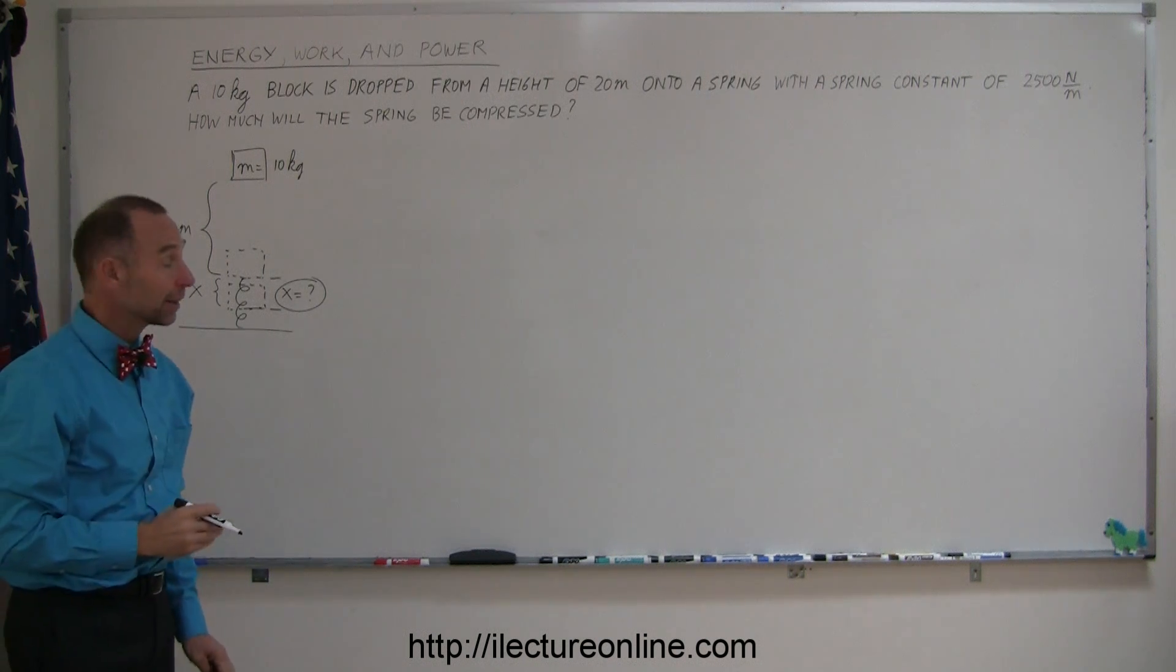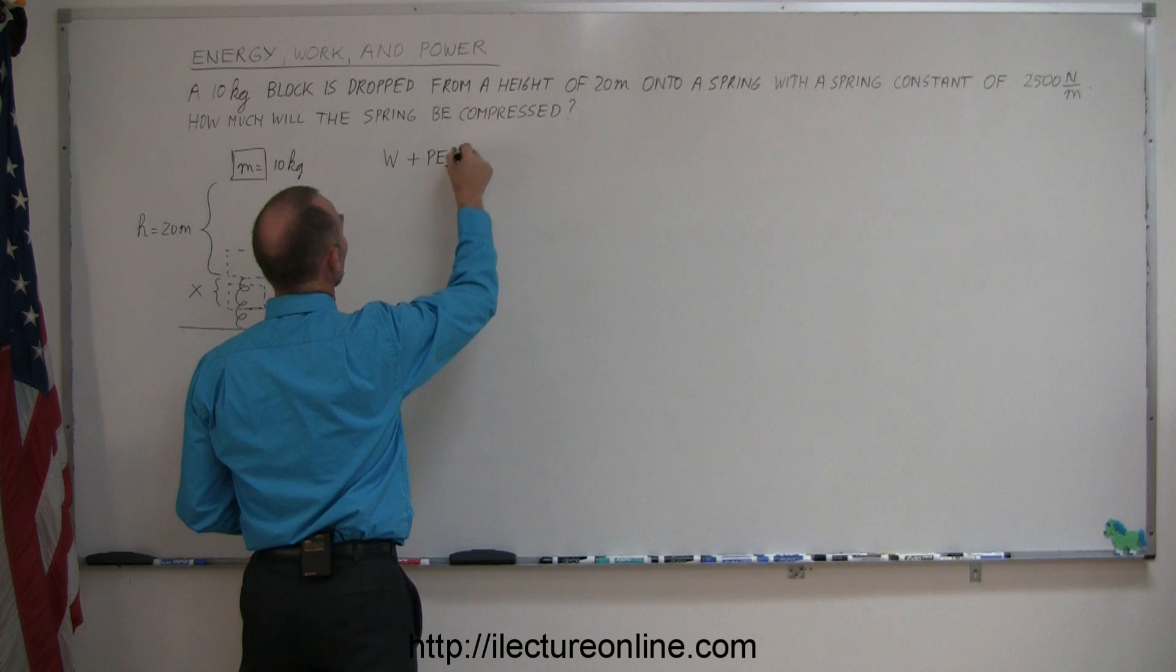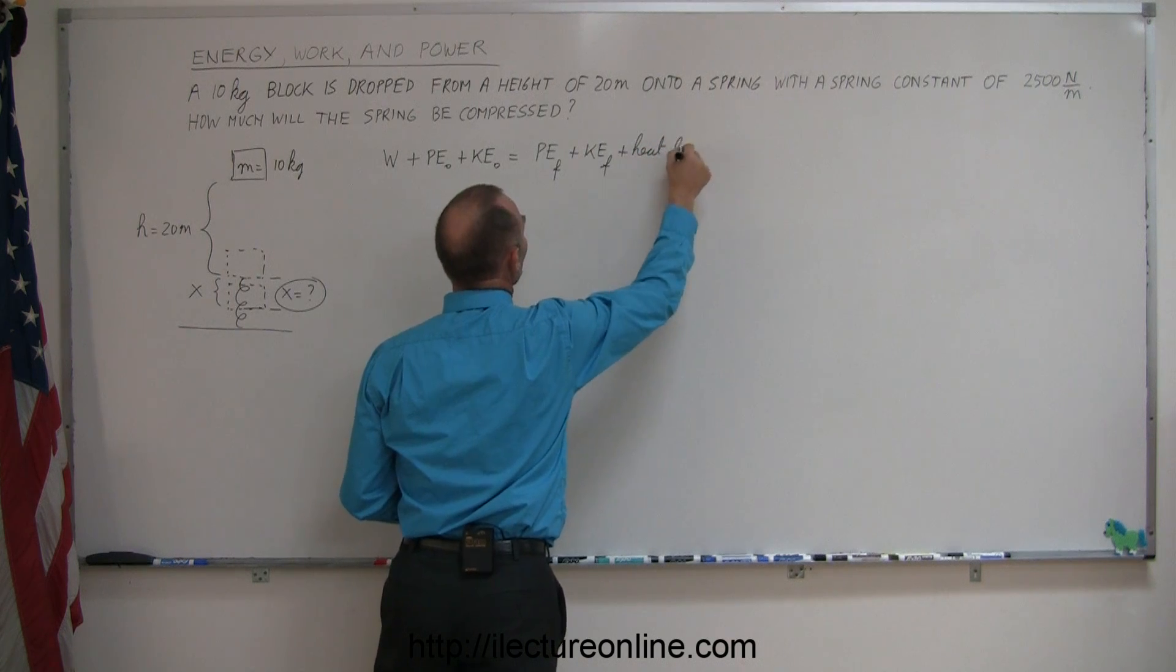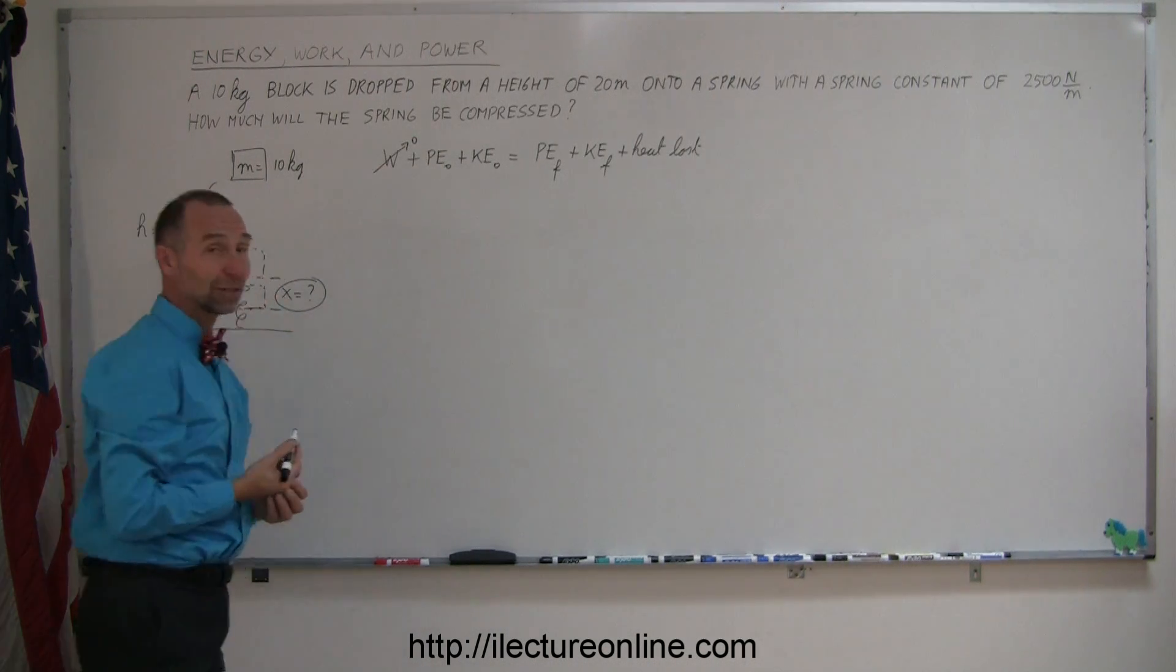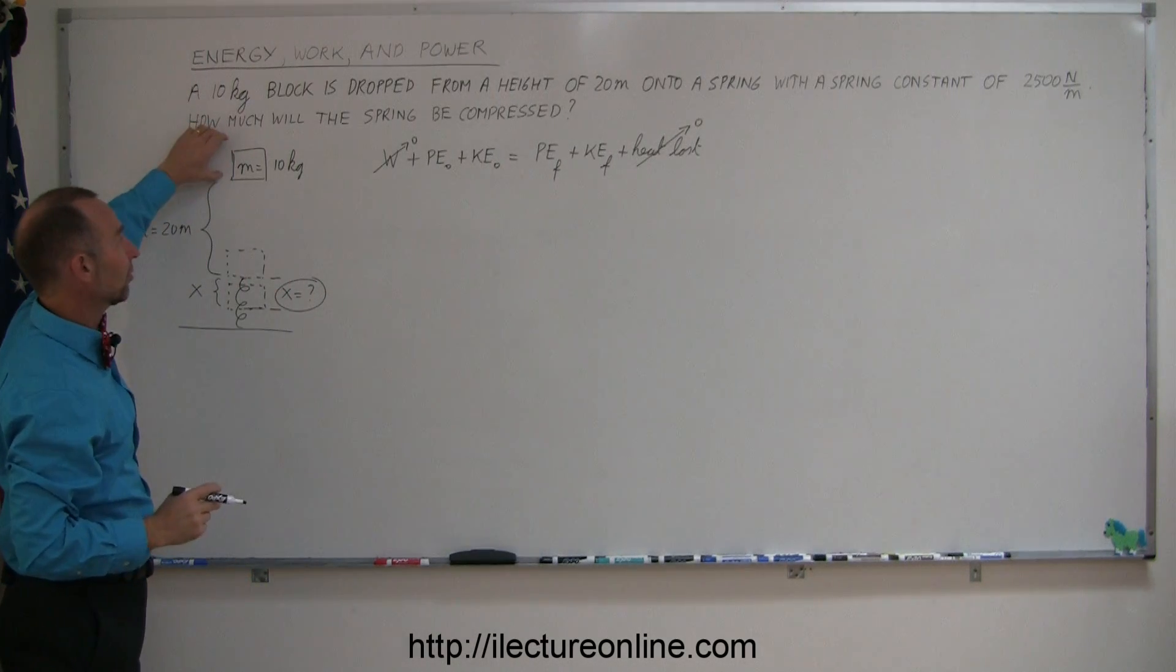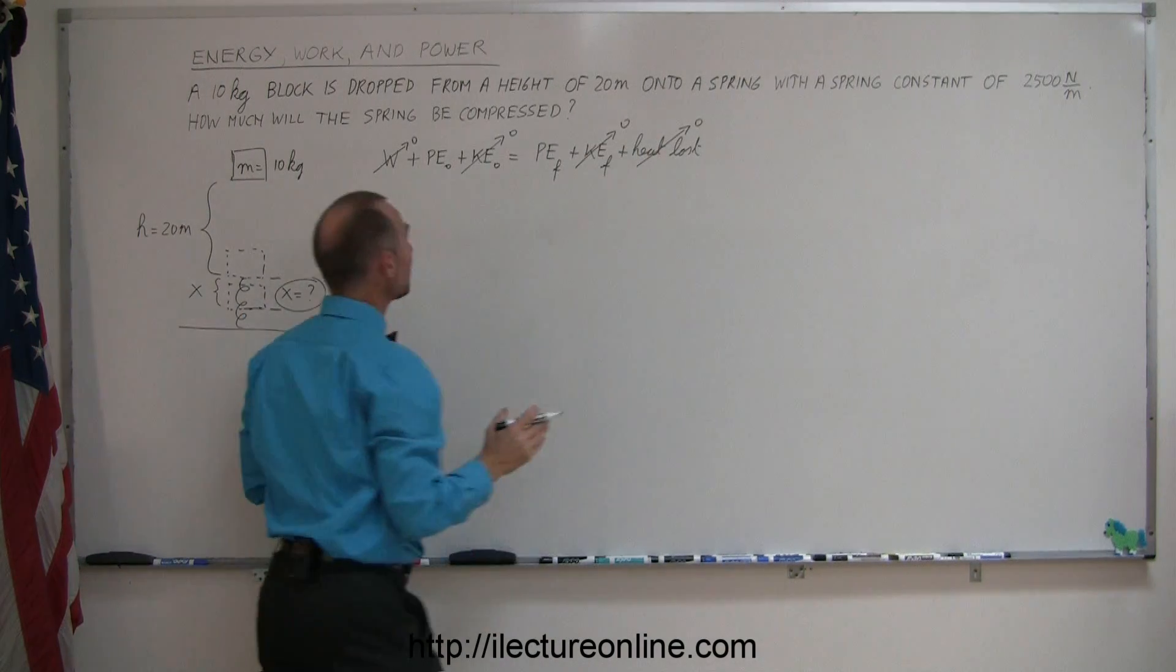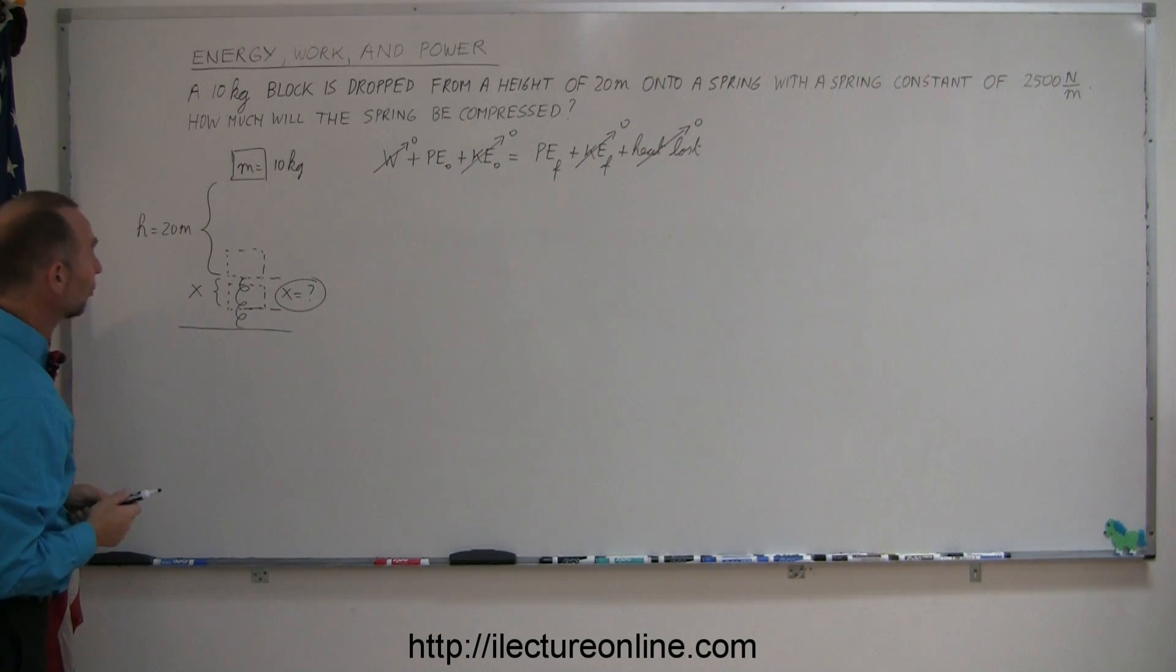When the block hits the spring, it will have fallen a distance of 20 meters. So, this distance right here to the top of the spring, that would be h equals 20 meters. And then notice that the block will drop down an additional distance of x until the spring is compressed. And then you say to yourself, well, how do we solve a problem like this? And again, I always like to go to the equation where we write work put into the system plus the initial potential energy plus the initial kinetic energy is equal to the final potential energy plus the final kinetic energy plus any heat lost in the process.